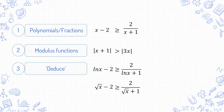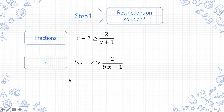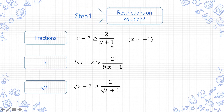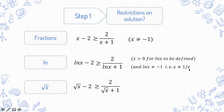Regardless of which category you are looking at, the first step is to note down any restrictions to the solution. Some types of functions — including fractions, ln functions, and square root functions — have restrictions on the solutions. For fractions, the denominator cannot be zero, so for this question x cannot equal negative 1. For ln functions, ln x is defined only when x > 0. Additionally, the denominator cannot be 0, so ln x ≠ −1, i.e. x ≠ 1/e, in order for 2/(ln x + 1) to be defined.